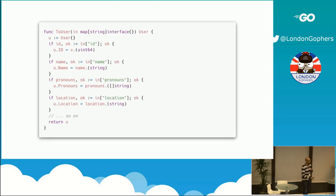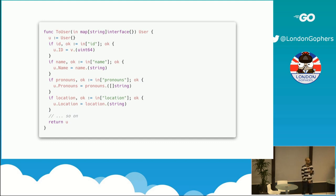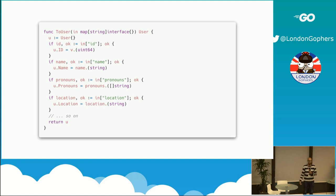If you are writing this function by hand, you might do something like this: take every value in the map, check if it's present, do some type coercing to make sure the compiler doesn't complain, and then assign it to the various fields in the struct. This is a little tedious if you're writing it by hand, but luckily there are a lot of generators which can write all of this tedious code for you. But what if we wanted to use reflection? What if we didn't have the capability of changing the services or were working at a different level of abstraction?